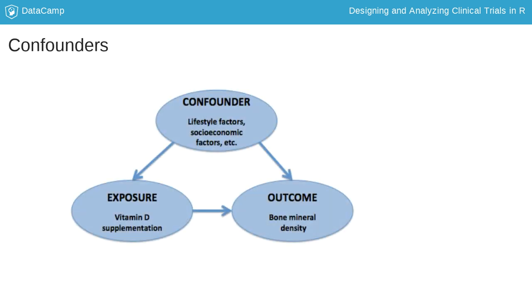For example, suppose we are interested in assessing the effects of vitamin D supplementation on bone mineral density in older women. We may find that women who choose to take vitamin D have different social factors and habits to women who do not. They may smoke less, exercise more, or be more likely to take calcium supplements. In an observational study it may be difficult to exclude the effects of these and other potential factors on bone mineral density and accurately measure the effect of just the vitamin D supplementation.